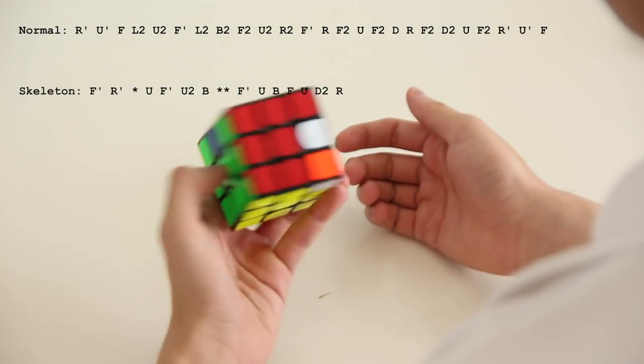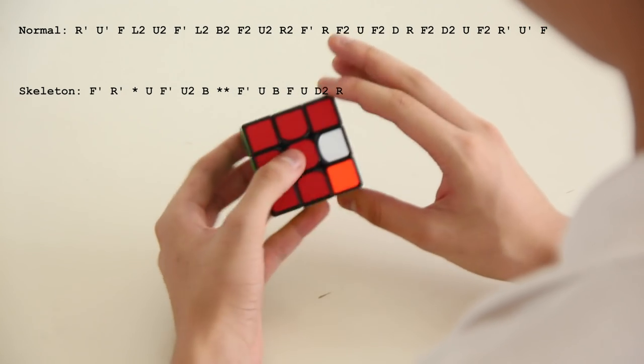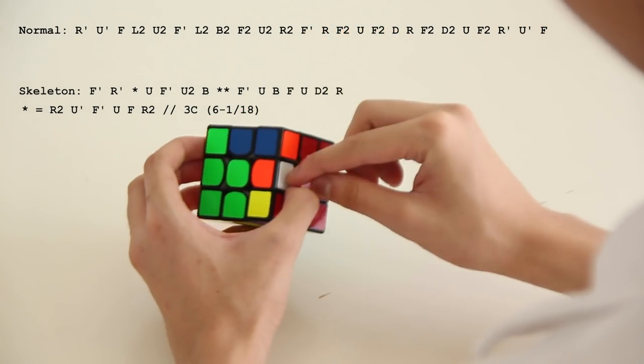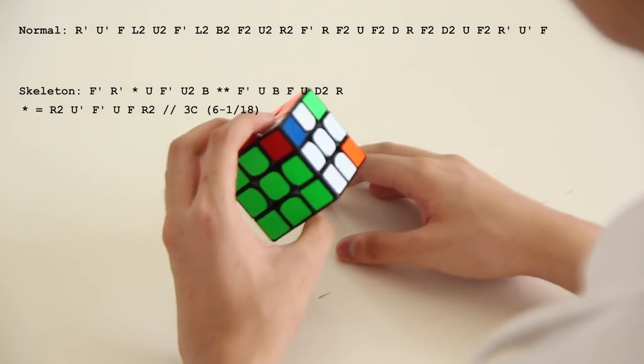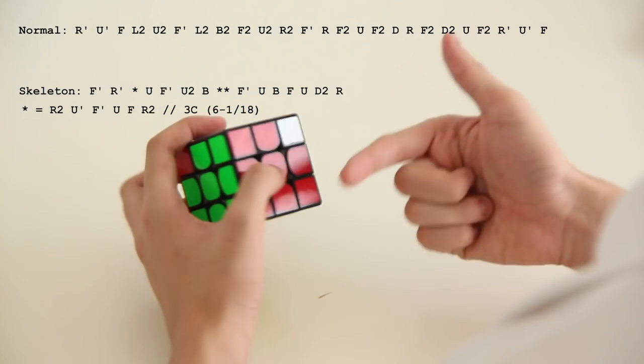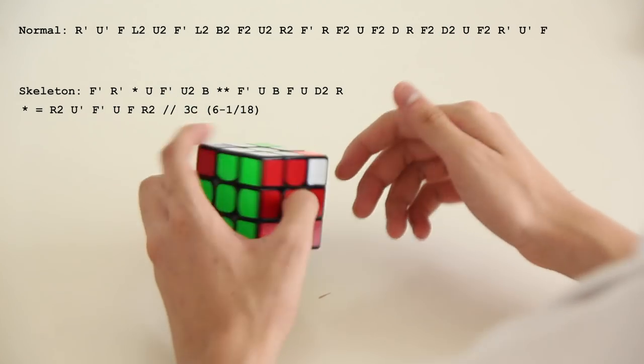So in this spot, this is actually something that Chongwen taught me. Thanks, Wrench! This case can be solved, the edges here can be solved by doing F2, and then basically just insert this edge here in F2 again. And in this case, it gives 3 corners, and that's only 6 moves, which cancelled 1, so it's 18 to 3 corners.